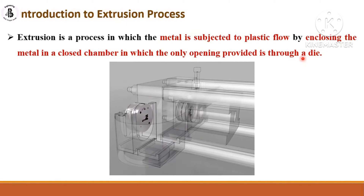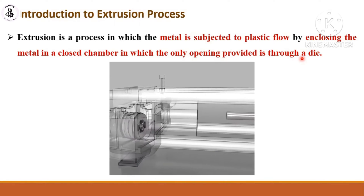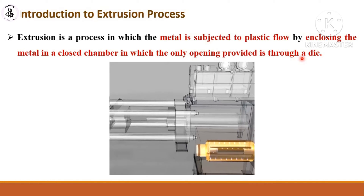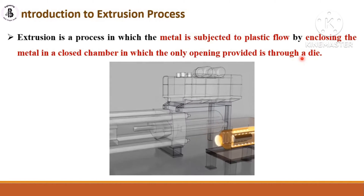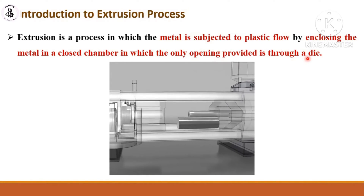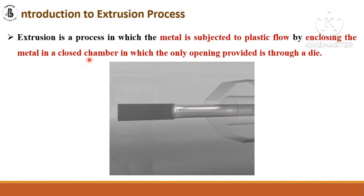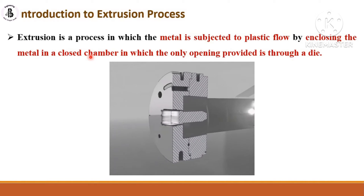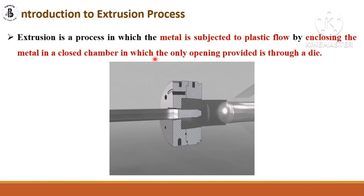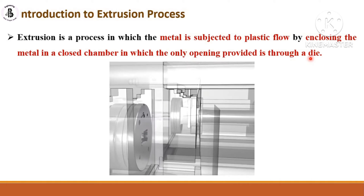The important part is the die material and the shape of the die. Whatever cross-sectional area is required for long objects, you use that cross-sectional area of the die. At the other end there is a closed chamber in which the material is filled, and with the application of high pressure this material passes through the die and is converted into the desired shape and size.